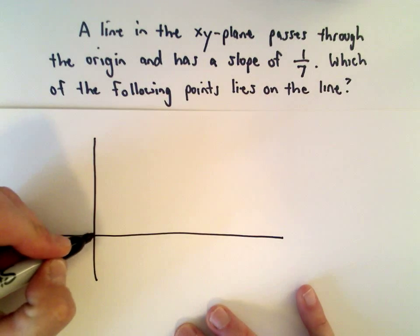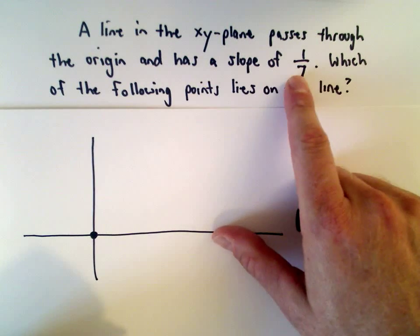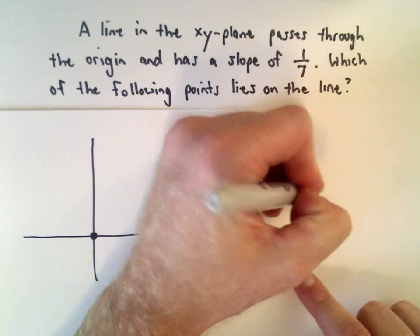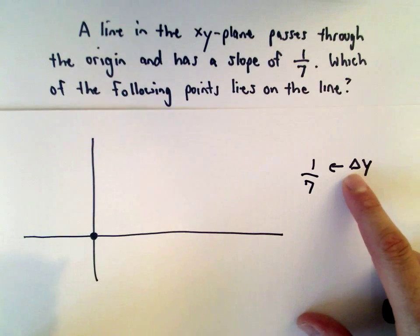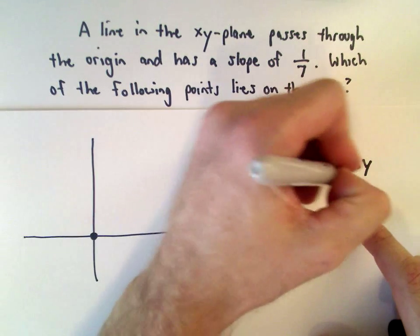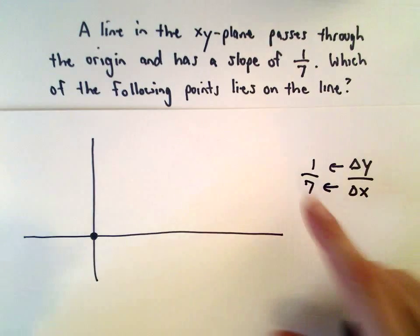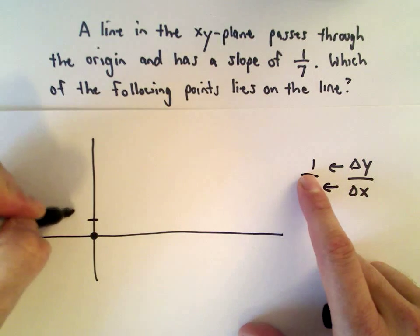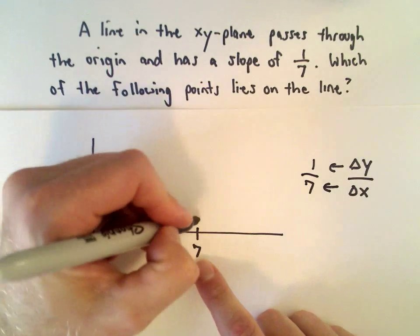I know that it goes through the origin, so there's one point, and it has a slope of 1 over 7. Remember the top part - that's the change in y. We sometimes write a little triangle Delta, which means change, so change in y over the change in x. From the origin we would go up one unit, and then over seven units to get another point.